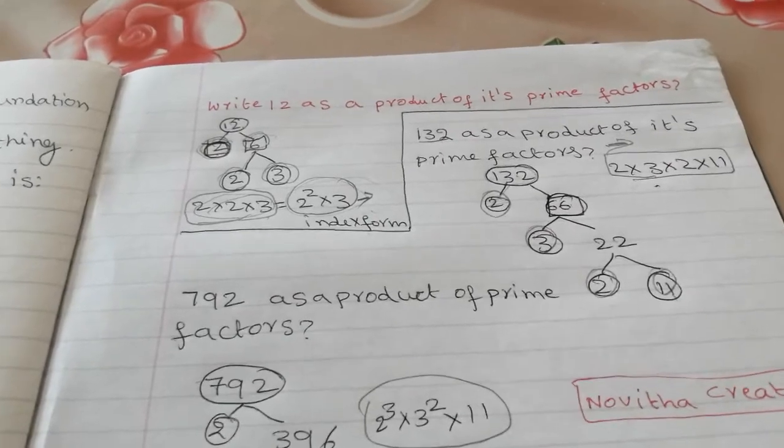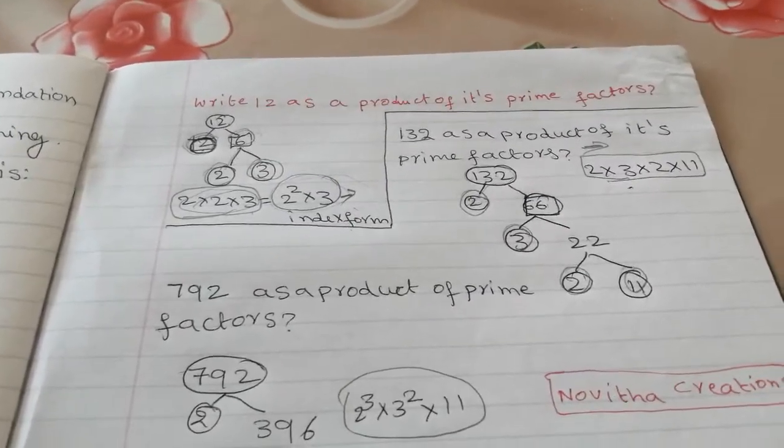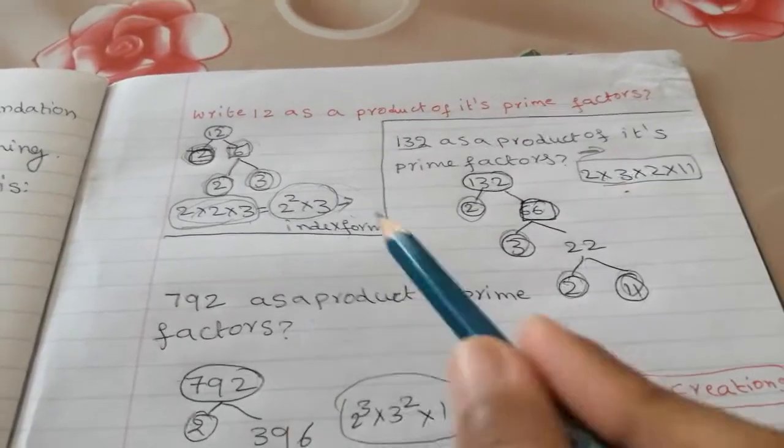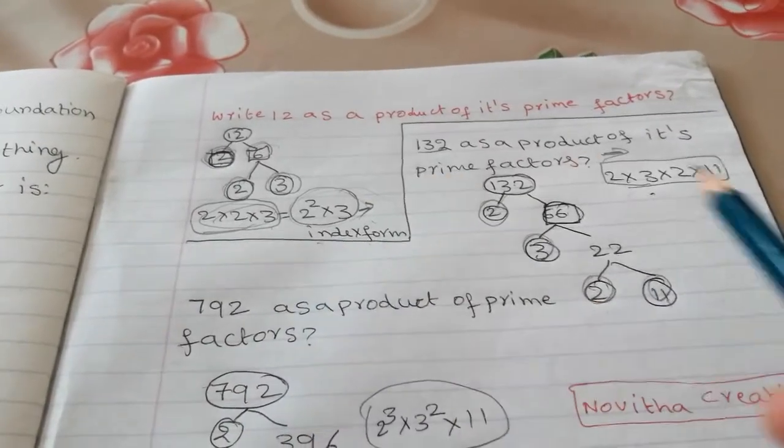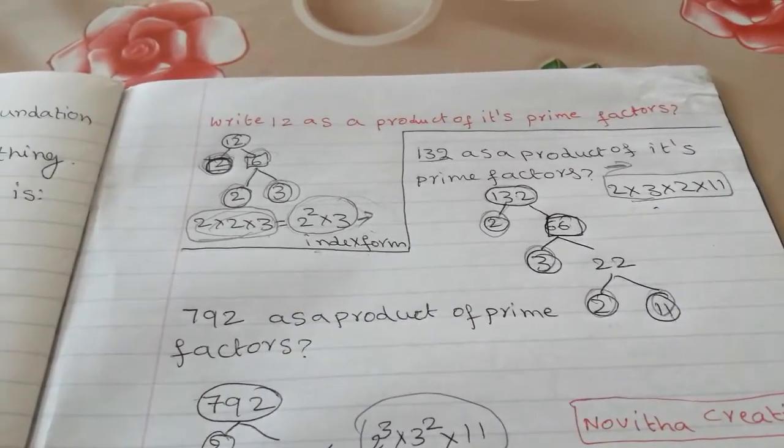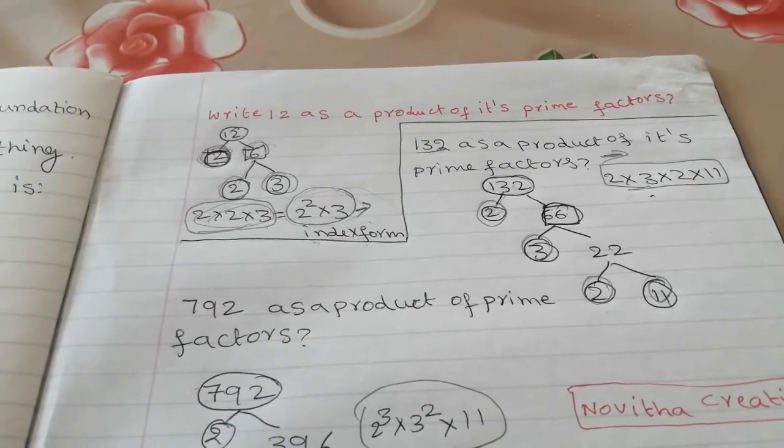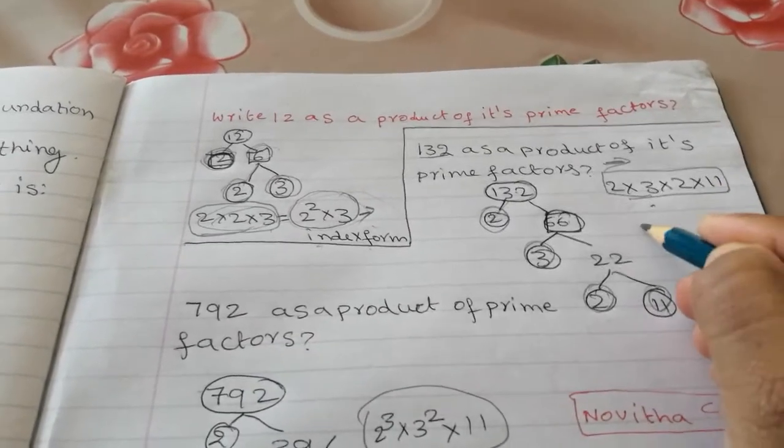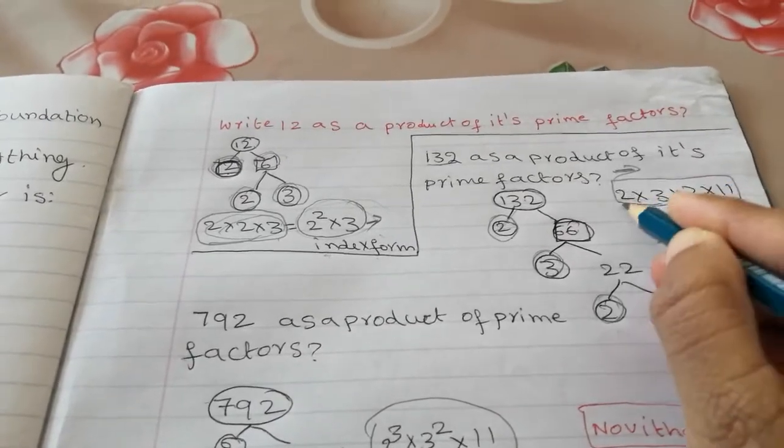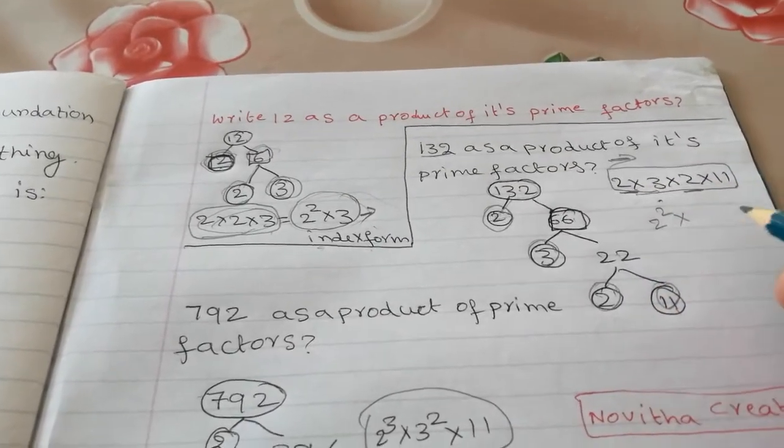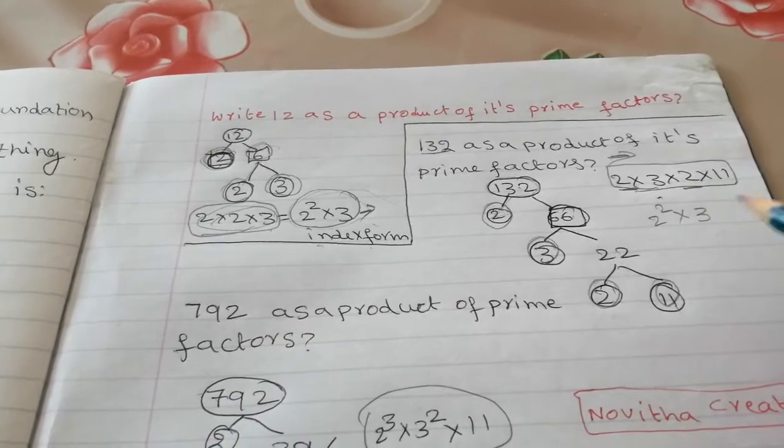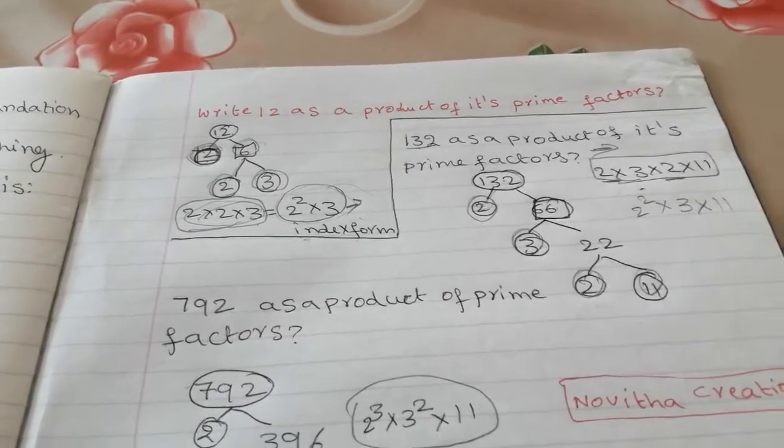If it is index form, what is your answer? Just see here and try here. I will give you 20 seconds. Yes, it is 2 square because there are 2 2's. 3 times 11.